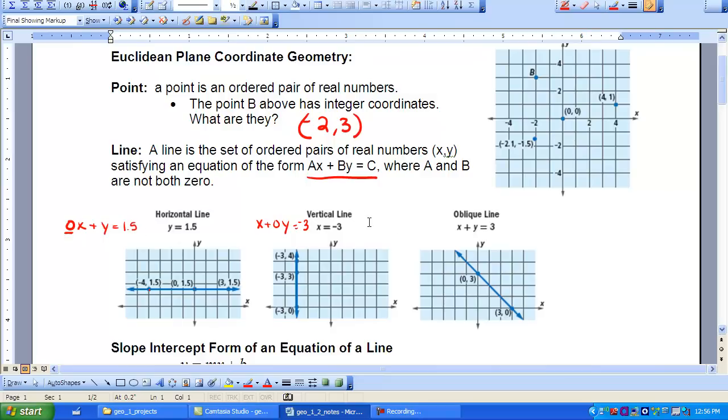Same thing over here with the vertical line, but in this situation, instead of the A being zero, it's the B that's zero. So it's X plus zero Y equals negative 3.